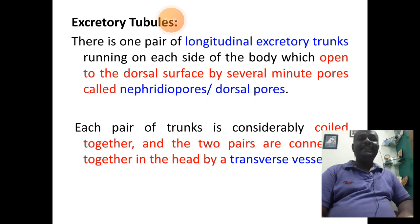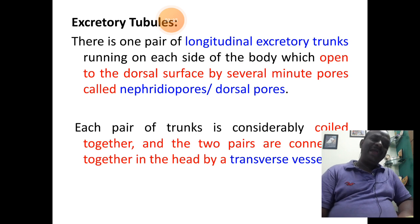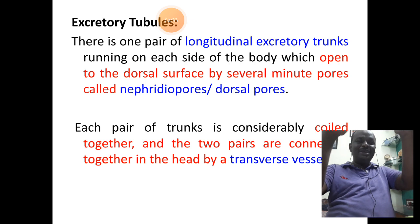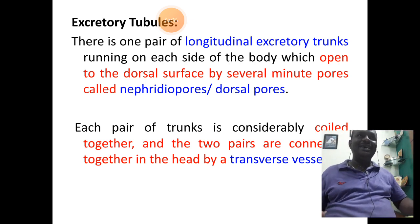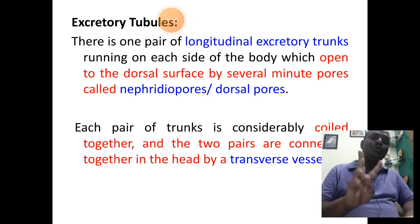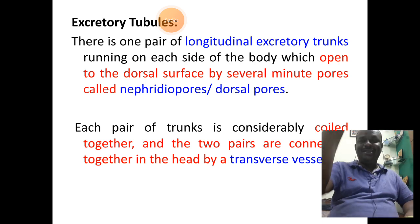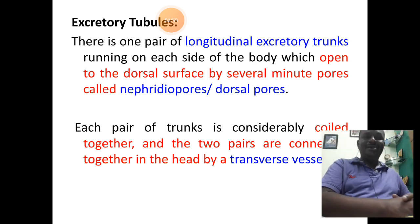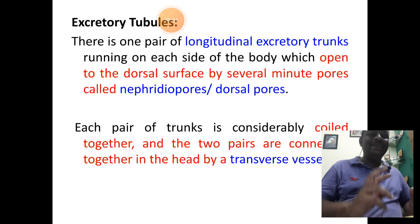The first part we shall understand in detail: excretory tubules. Excretory tubules are paired longitudinal tubules, also referred to as excretory trunks. Longitudinal means elongated. They run along the anteroposterior axis on the lateral sides of the body. On each side you find a pair of excretory tubules or trunks, giving two pairs overall.